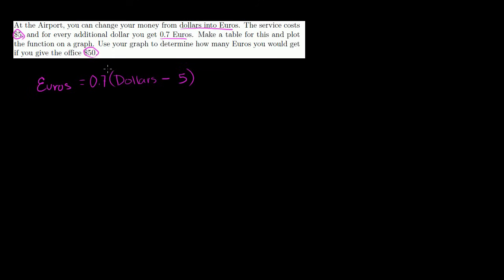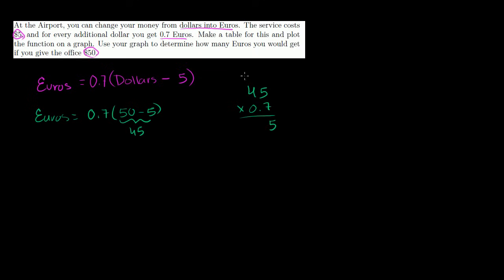We can actually answer the question right away. If you give them $50, euros equals 0.7 times (50 minus 5), which is 0.7 times 45. Computing that: 45 times 0.7 — 7 times 5 is 35, 4 times 7 is 28 plus 3 is 31, and with one decimal place that's 31.5. So if you give them $50, you get 31.5 euros.